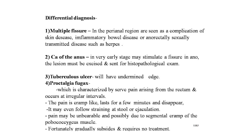Multiple fissures in the perianal region are seen as a complication of skin disease, inflammatory bowel disease, and anorectal sexually transmitted diseases such as herpes. Carcinoma of the anus at a very early stage may simulate a fissure in ano; if there is any doubt on rectal examination, the lesion must be excised under general anaesthesia and submitted to histological examination. A tuberculosis ulcer may look like a fissure in ano but will have undermined edges. Proctalgia fugax is characterized by severe pain from the rectum occurring at irregular intervals; the pain is cramp-like, lasts a few minutes, disappears spontaneously, may occur at night, and is seen more commonly in patients under stress or anxiety.